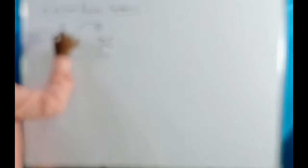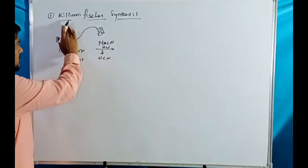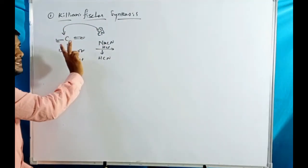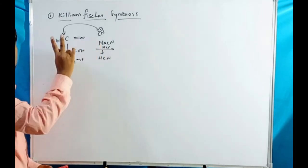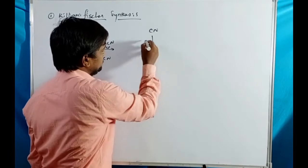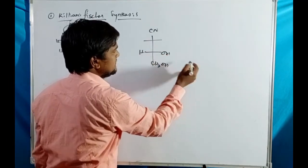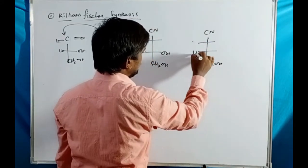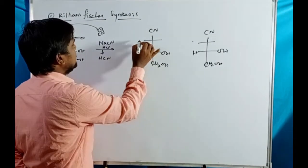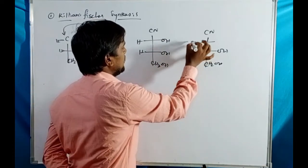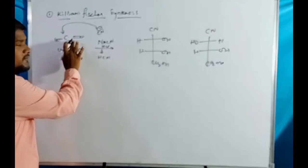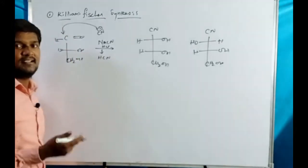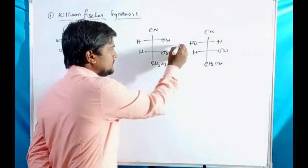Since the SP2 carbon has planarity, the cyanide nucleophile can attack either above or below the plane, producing two types of isomers. If OH shifts to the right side it gives the erythrose isomer; if OH is on the left side it gives the threose isomer. Erythrose and threose are the two products. This is the first step of the reaction.